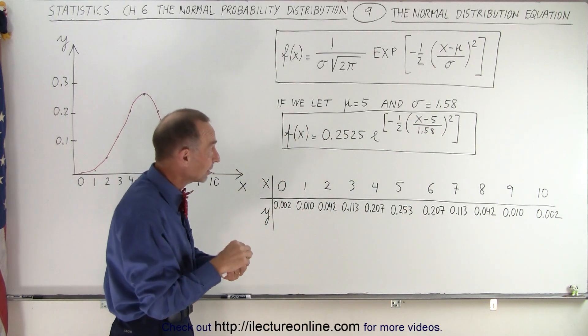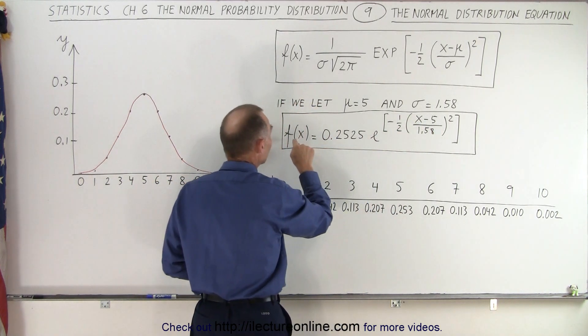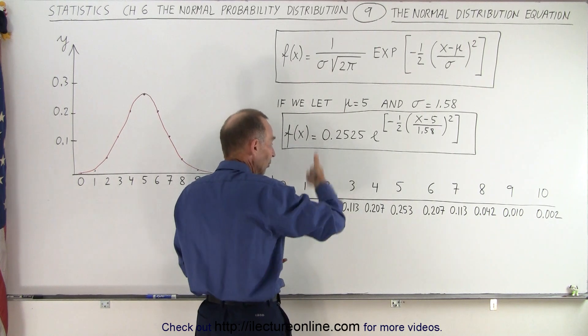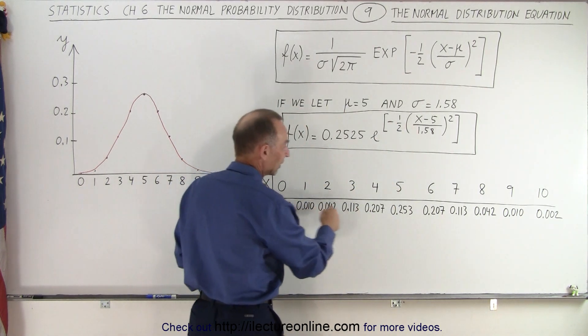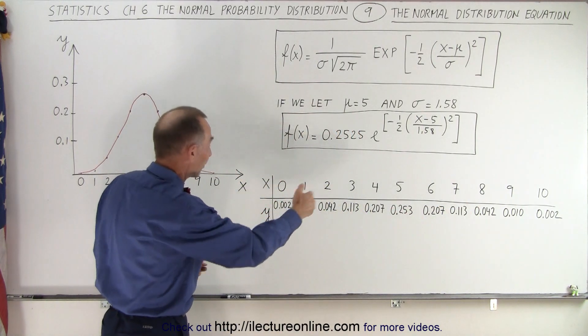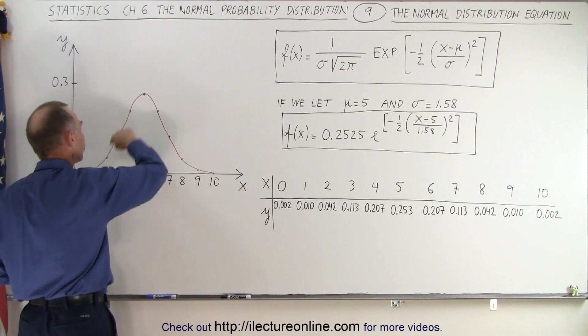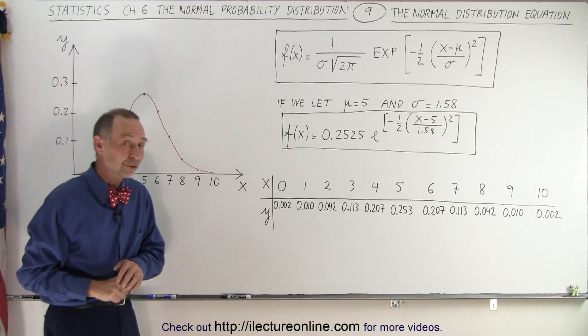And then, using a calculator, you can plug in values for x and we can then calculate the function, the function of x, the probability that a specific event can occur. Here, I did that for you already just using my calculator in advance. We get all the various values, we plot the points, and sure enough, the points do represent that exact curve of a normal probability distribution.